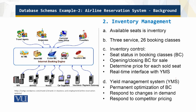In the airline industry jargon, inventory is a seat. Seats can be business class or economy class. There are actually 26 booking classes, and they have different prices and different conditions.